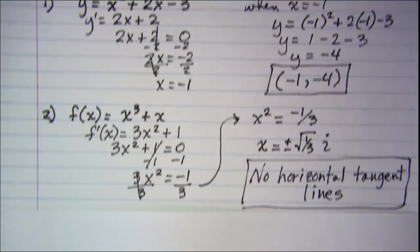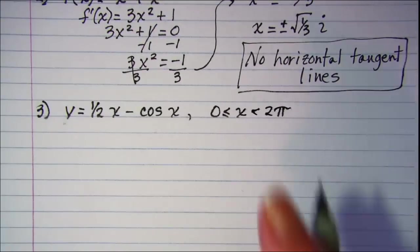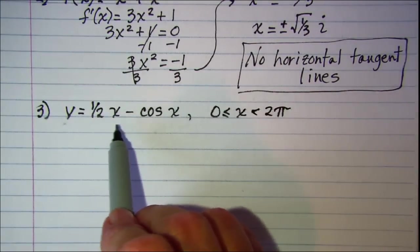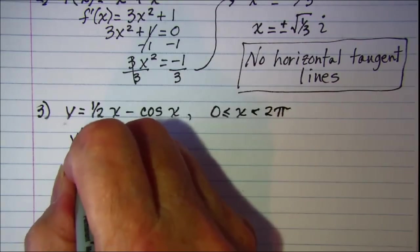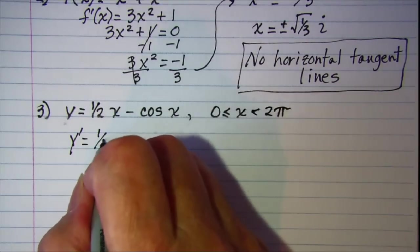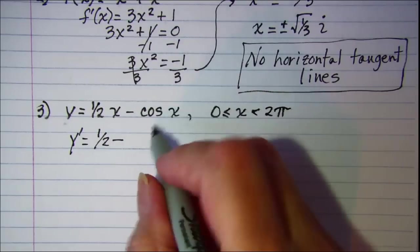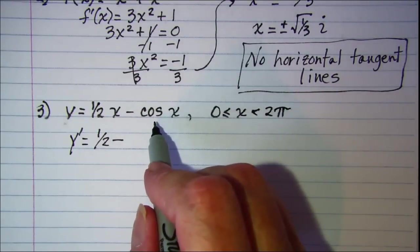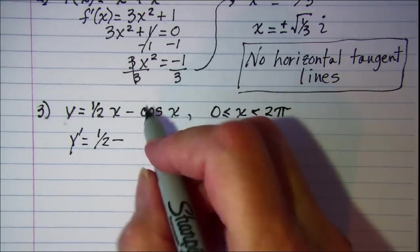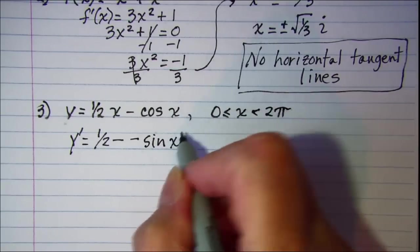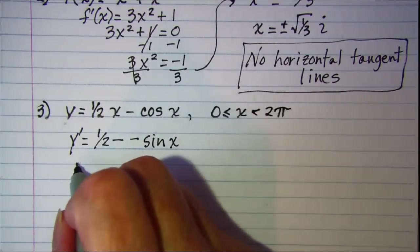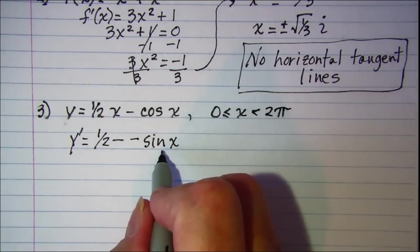Our last example, our function is y equals 1 half x minus cosine x. So we need the derivative. Derivative of cosine is the negative sine. So our derivative now, we have to set equal to 0.